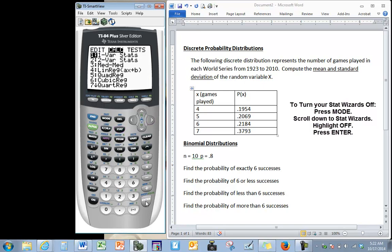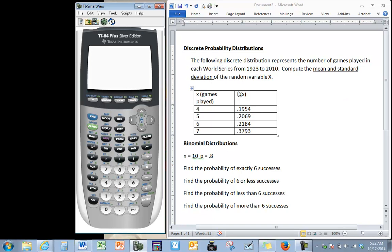stat calculate one of our stats, you are not able to enter in list one comma list two. This is why you need to turn off your stat wizards. After you do any work with discrete probability distributions though you do want to turn your stat wizards back on.